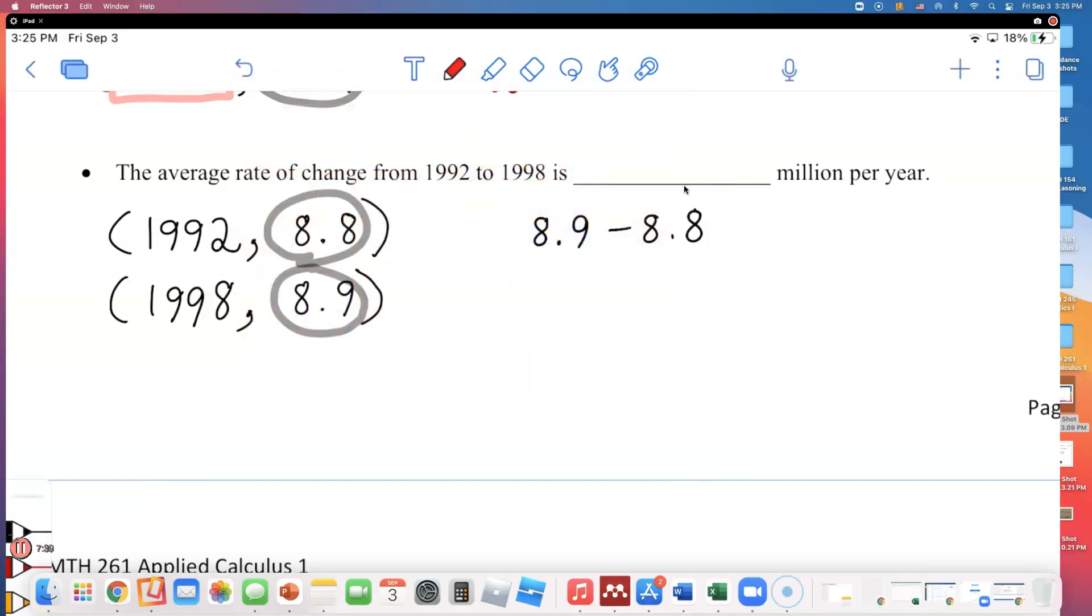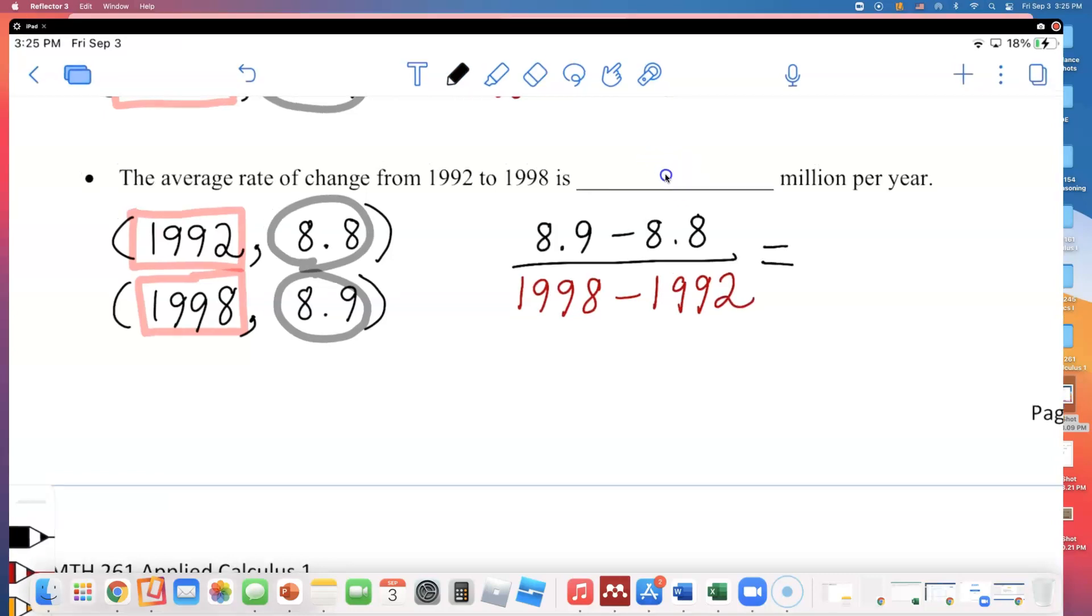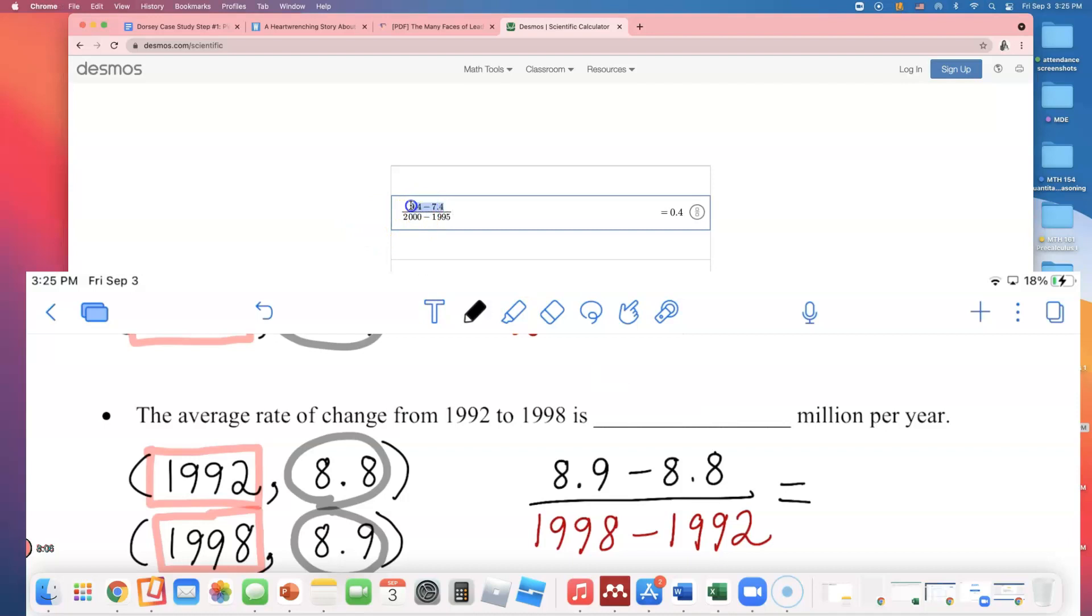I will have to subtract the y values, or the number of trips, and put that on the numerator. 8.9 minus 8.8 over, and I need to figure out the difference in the years. I've been stuck in I-95 traffic for an hour and 30 minutes getting home today. We're subtracting this number minus that number, so that will be 1998 minus 1992. We're about to get the answer.